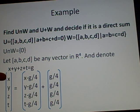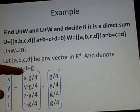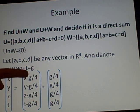We can write [x,y,z,t] = [x-g/4, y-g/4, z-g/4, t-g/4] + [g/4, g/4, g/4, g/4]. We can check that the first matrix is in U, as adding all entries gives (x+y+z+t) - g = g - g = 0, so that's satisfied.